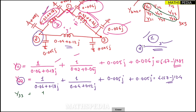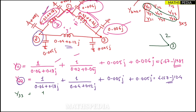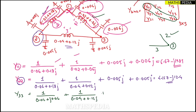For Y33, node three has lines two and three connected. Line two has impedance 0.02 + j0.06 and line three has 0.04 + j0.12. Add half-line charging for each: j0.006 for line two and j0.005 for line three. The answer is Y33 = 7.5 − j22.2 approximately.